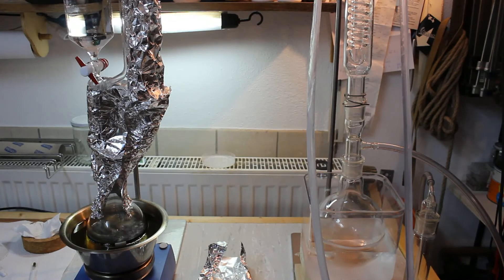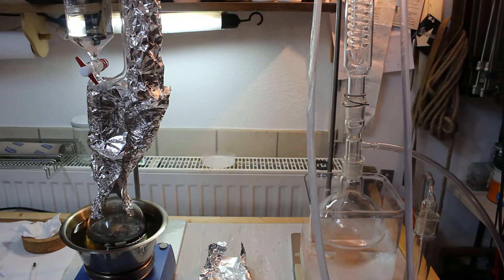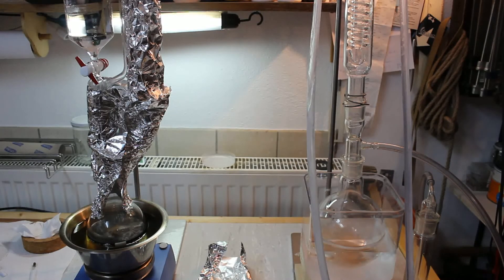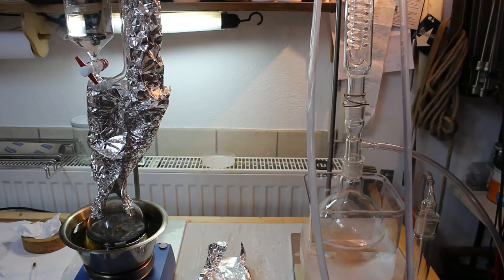Since the acid is only catalyzing the reaction you can theoretically keep distilling over as much ether as you want as long as you keep adding fresh ethanol. In reality the sulfuric acid is consumed in side reactions so the amount of ether you can distill off is limited. I started out with 300 milliliters of additional ethanol in the addition funnel and I think this should produce enough ether for all my upcoming experiments. So I'll be stopping the distillation once I've added all of my 300 milliliters. But I'm sure you could go a longer way with the sulfuric acid we added.